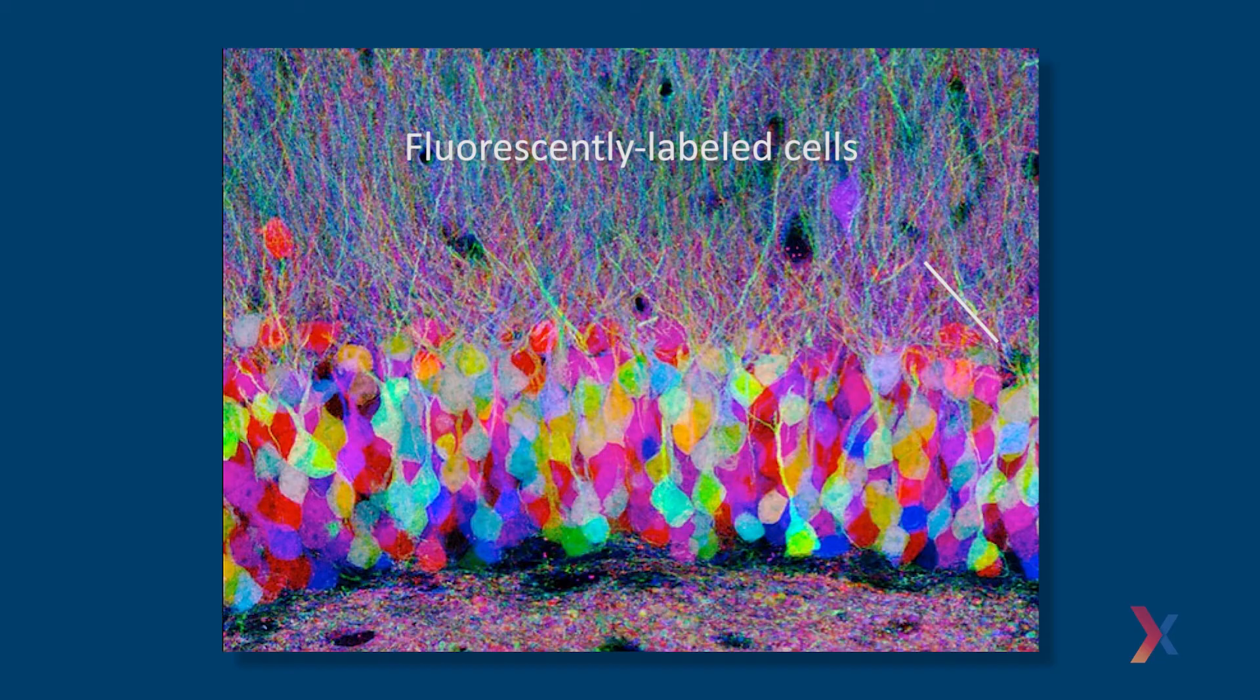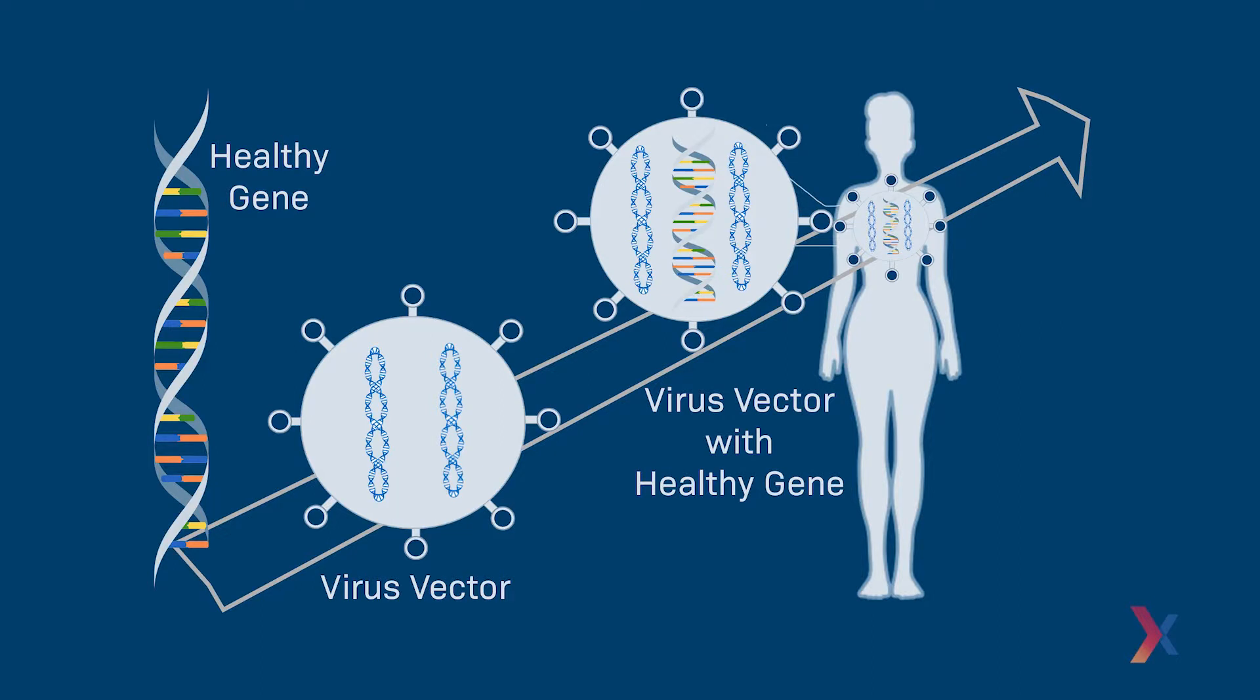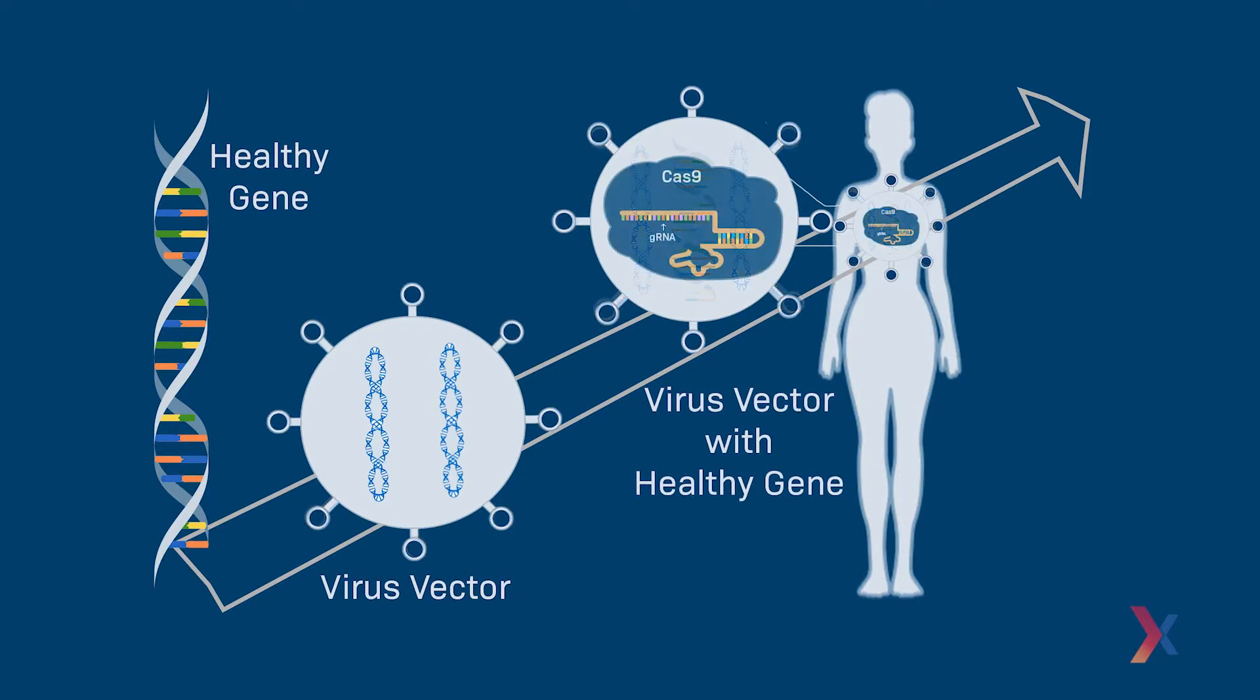So why do we even want to deliver outside molecules into cells? A scientist may want to introduce DNA, RNA, or protein in order to investigate a biological process or to treat disease. For example, a scientist may want to introduce a fluorescent protein to track a specific cell. To treat disease, a researcher may introduce a functional copy of the faulty gene or deliver a genome editing agent like CRISPR-Cas9 to correct the faulty sequence.